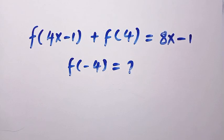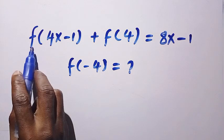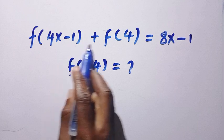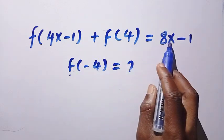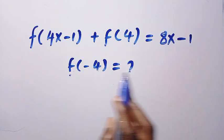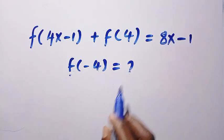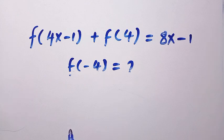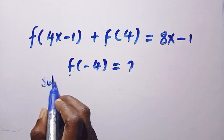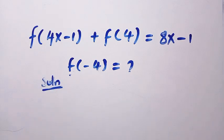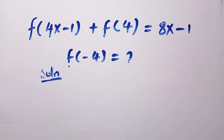Good day viewers, you are welcome. How to solve these nice functional equations in a general form. We are giving f of 4x minus 1 plus f of 4 equals 8x minus 1. And what is f of minus 4? I will solve this problem in two different methods, and let's see how we can solve this in two different ways.